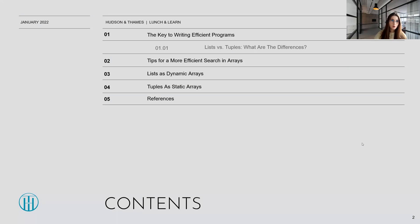So what are we going to talk about? We'll start with an introduction on what is the key to writing efficient programs and dive a little bit deeper into the two foundational data structures, lists and tuples, and what are the differences between them. After that, we'll proceed to more concrete learning outcomes of this chapter, starting with tips for a more efficient search in arrays, moving on to lists as dynamic arrays and tuples as static arrays. And everything is nicely concluded with a short reference section. So without further ado, let's start.